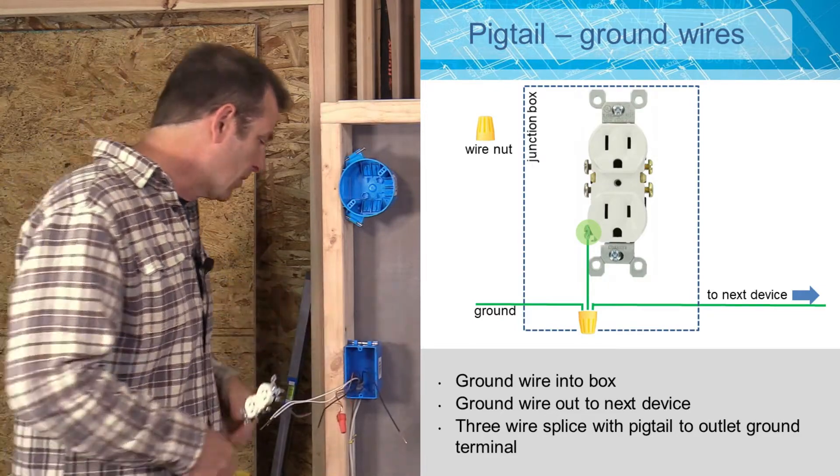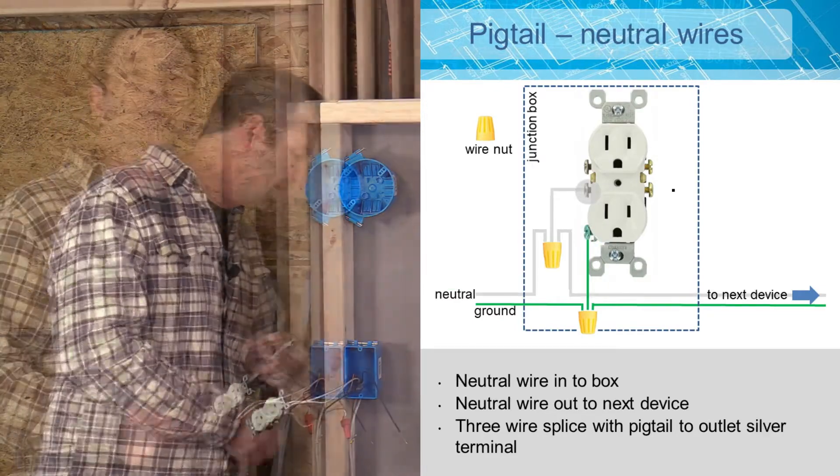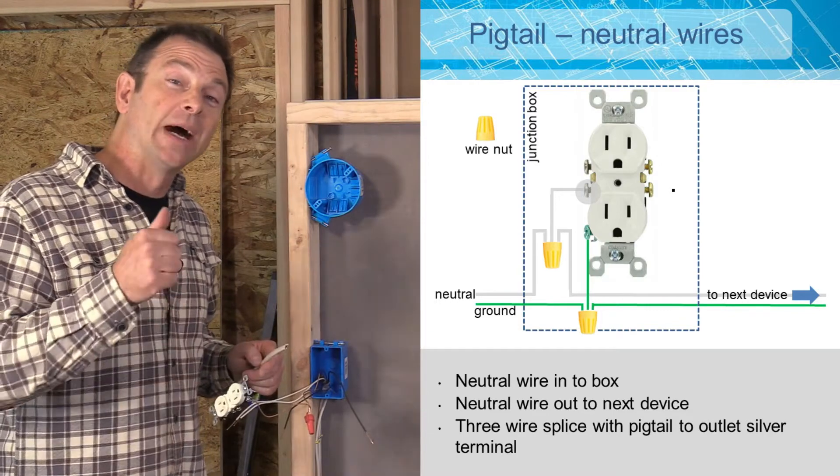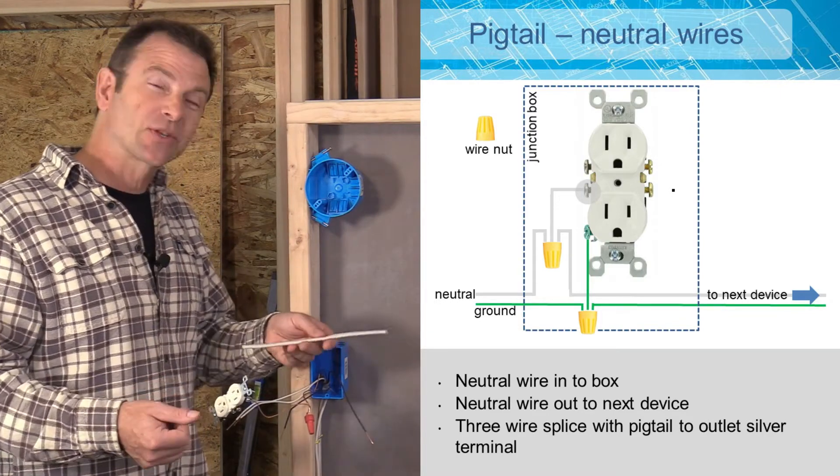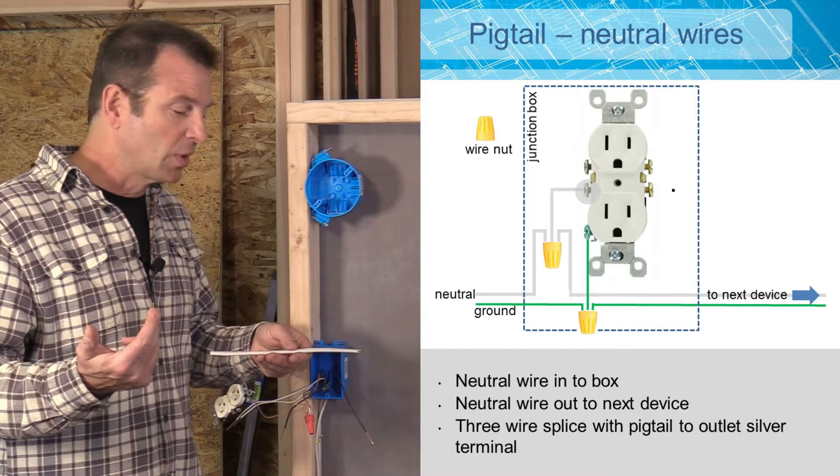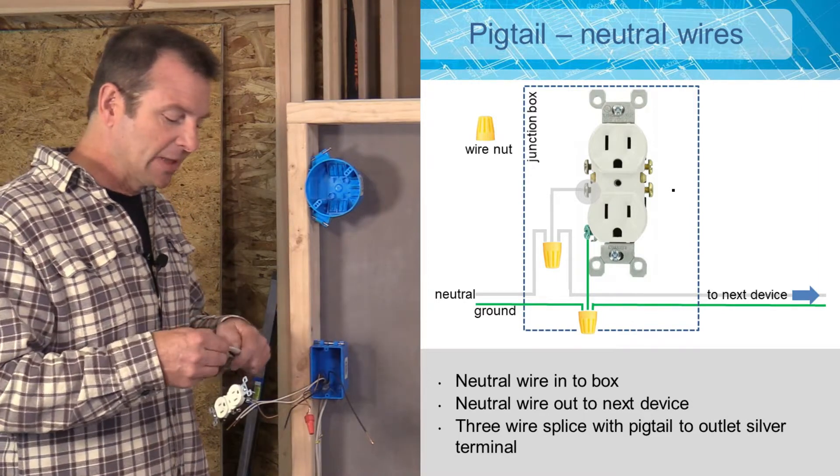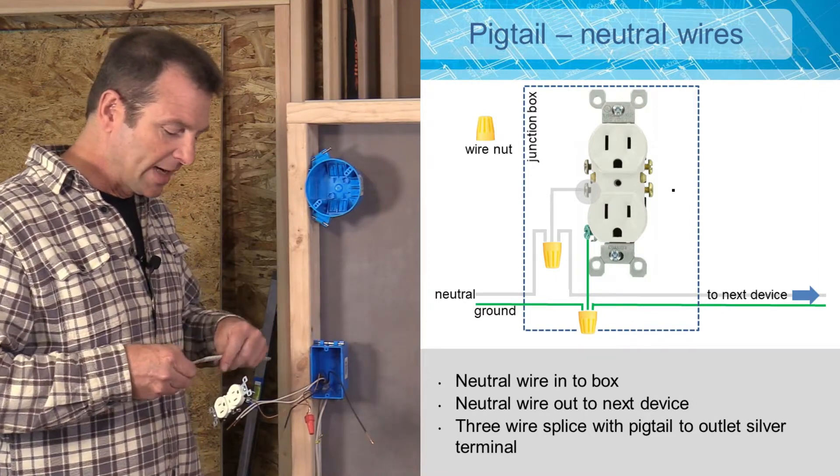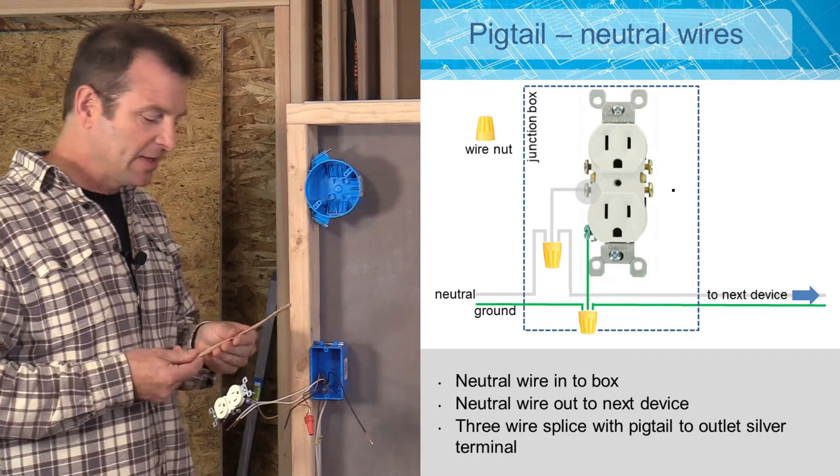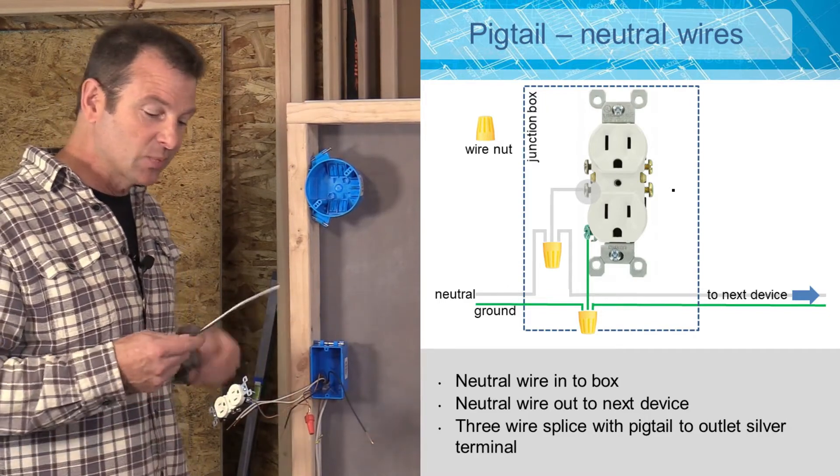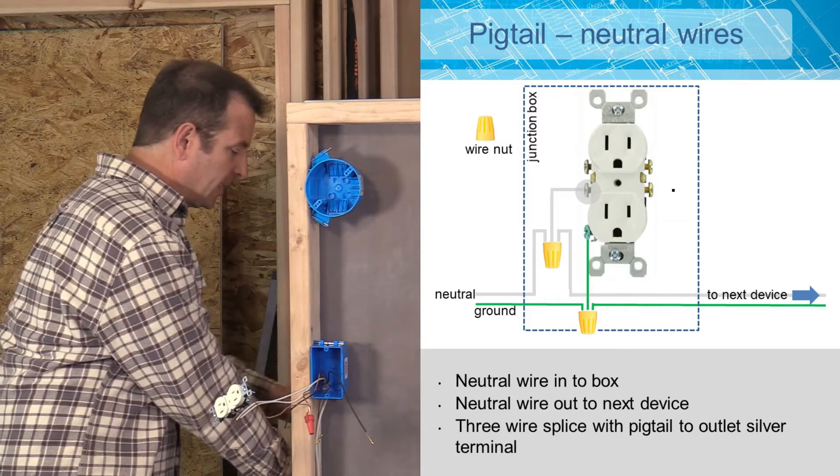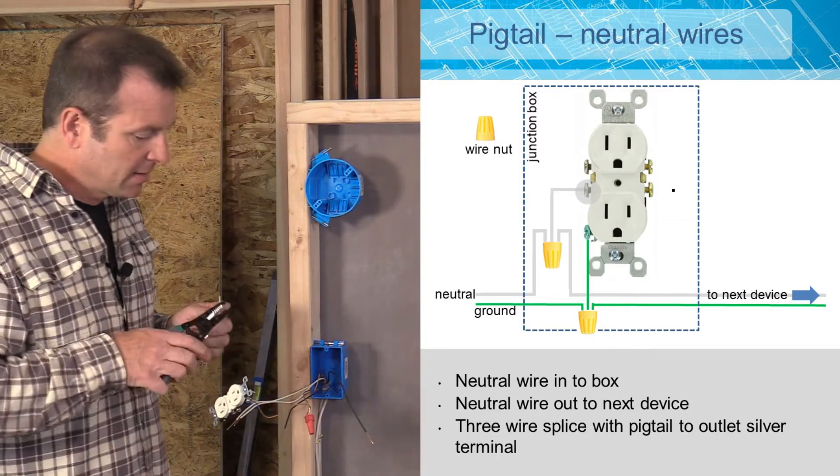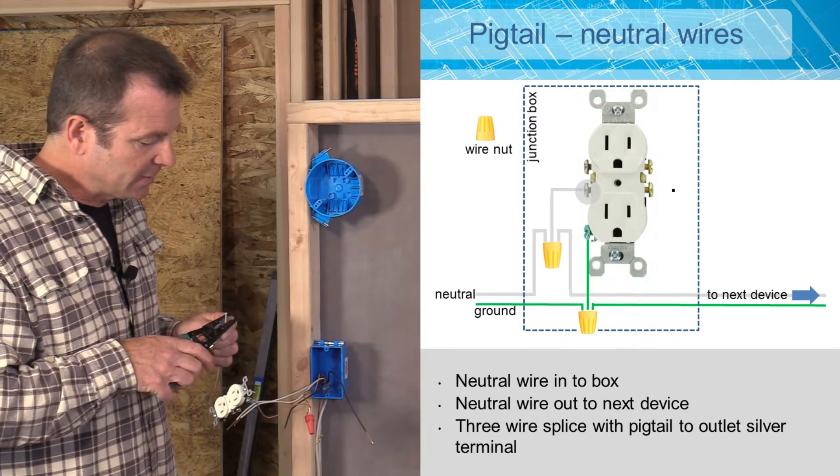Now we can move on to our neutral. I need a pigtail for my neutral wire now. I have a scrap of Romex. I cut this off the coil. You're going to go ahead and pull out your neutral wire. And I have in here also my hot, this will be my hot pigtail. So I'm going to go ahead and make this connection for my neutral.